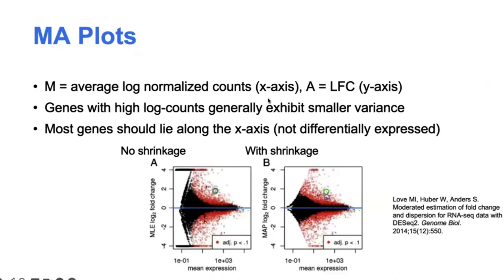A second useful plot is the MA plot. M represents the log-fold change and A represents the mean expression intensity or counts. A is on the y-axis and average expression is on the x-axis. This visualization is useful to see how data are distributed along different expression values. Genes with higher counts towards the right tend to have more stable estimates, whereas genes with lower counts are much more spread out. Most genes should be non-differentially expressed and lie around the zero line, while those in red above the x-axis are up-regulated and below are down-regulated.